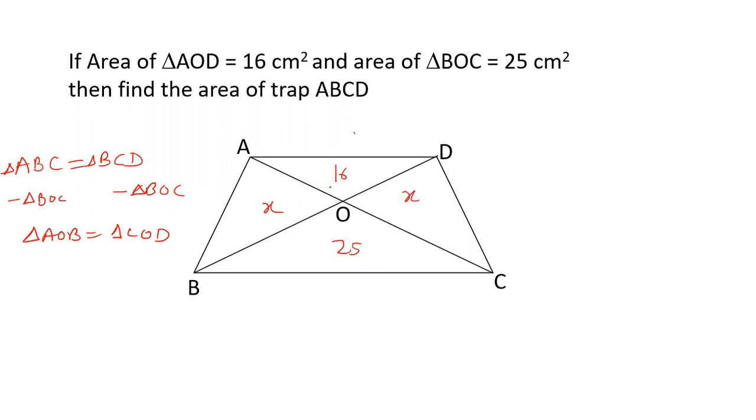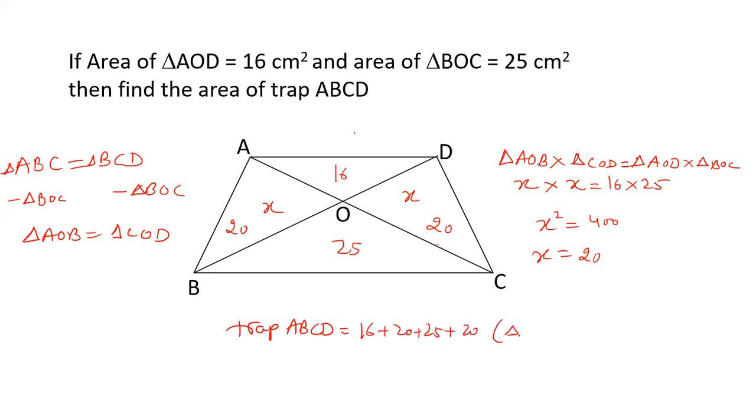Triangle AOD and triangle BOC are equal. Which four triangles have we taken? AOD, COD, BOC, and AOB. All these are the same.